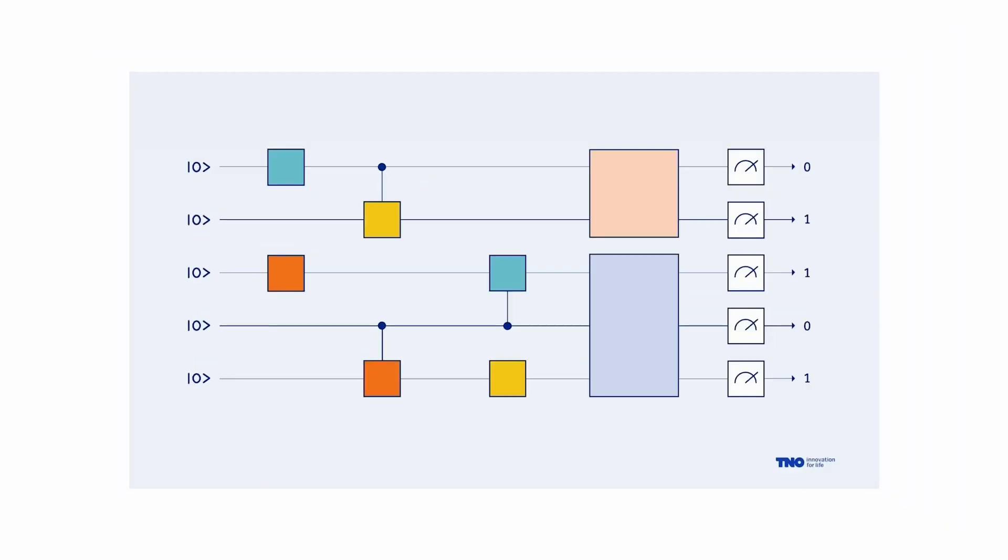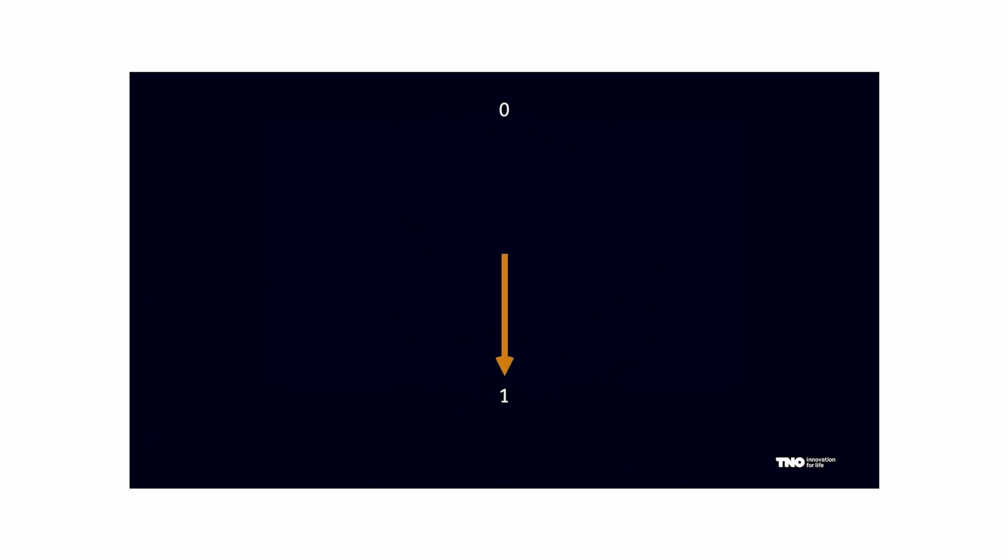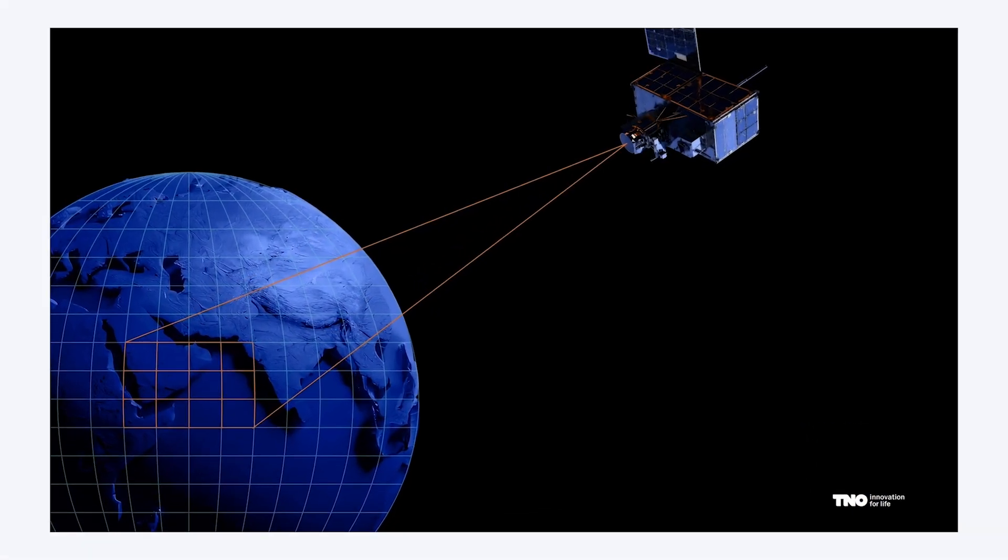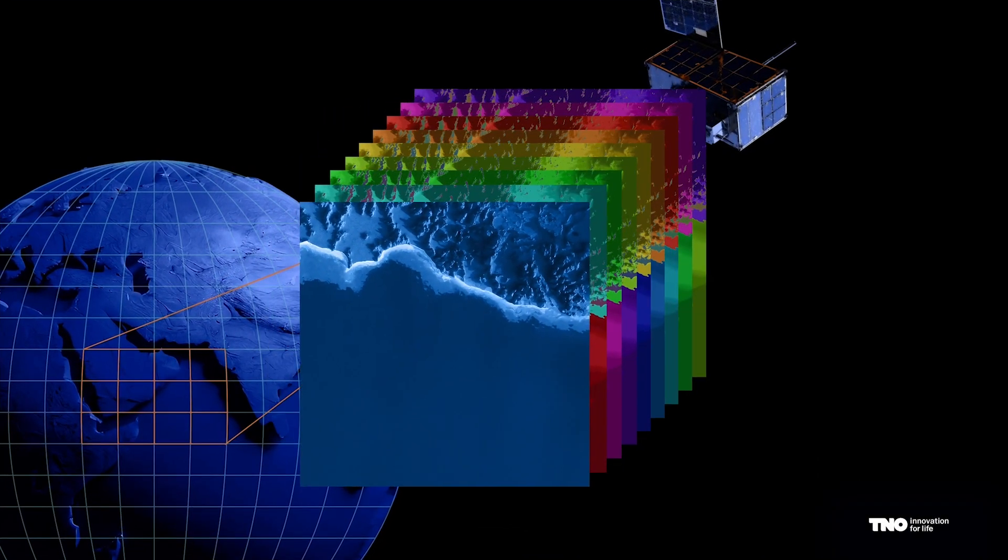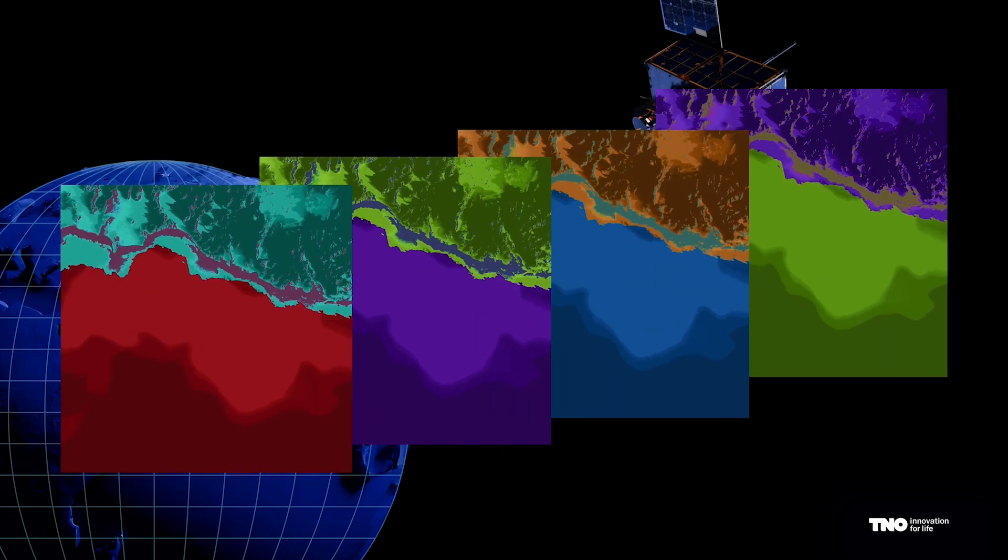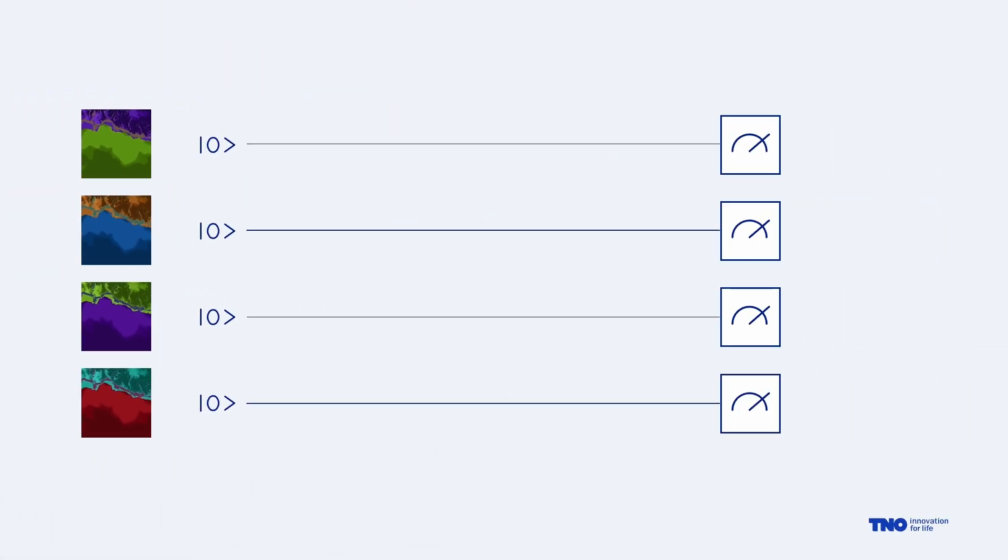Let's rewind for a minute and remember where we started. We had satellite images that we want to use to predict the water depth. So let's look at one of those pixels and split it into the different wavelengths. But now we just use the four most significant wavelengths and we build a quantum circuit, one qubit per wavelength.